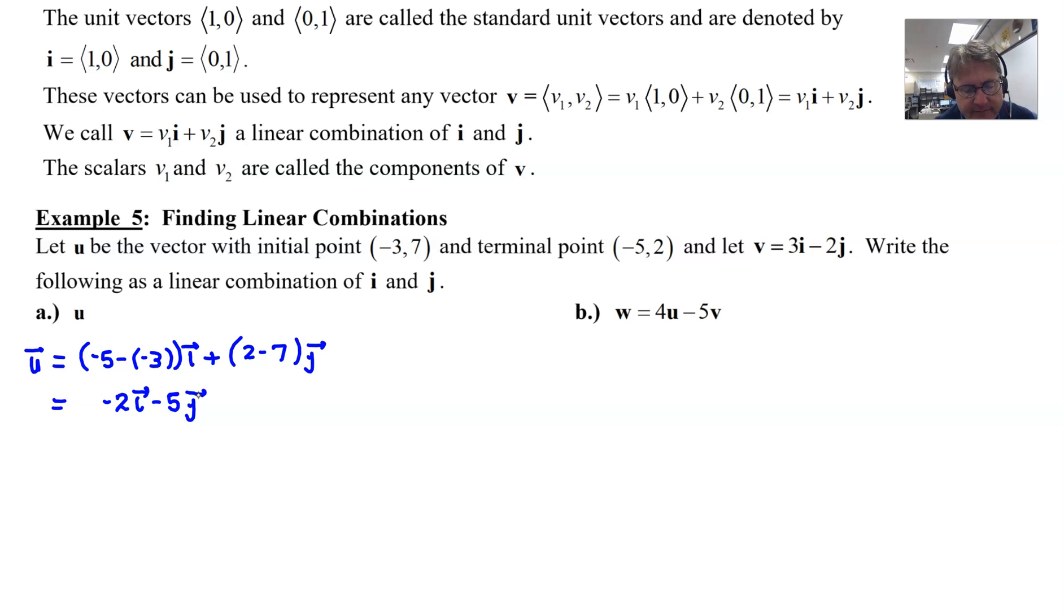Now for part B, we have a brand new vector in town, vector w, defined as four times vector u minus five times vector v. So we just have a little bit more work to do here.